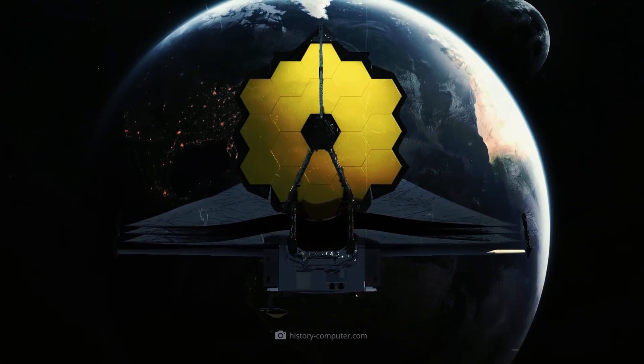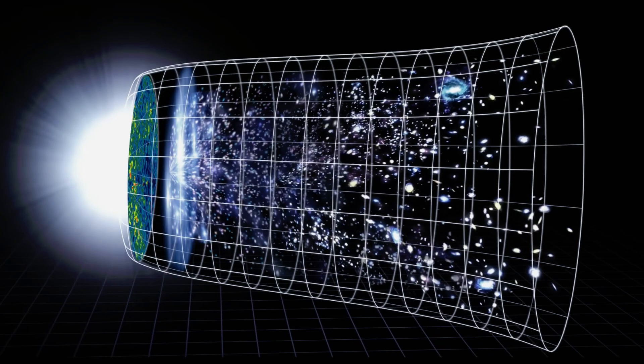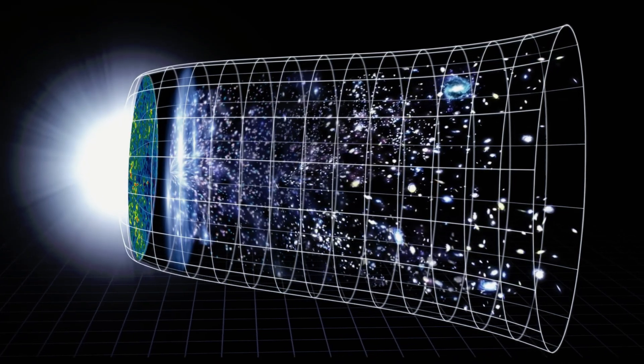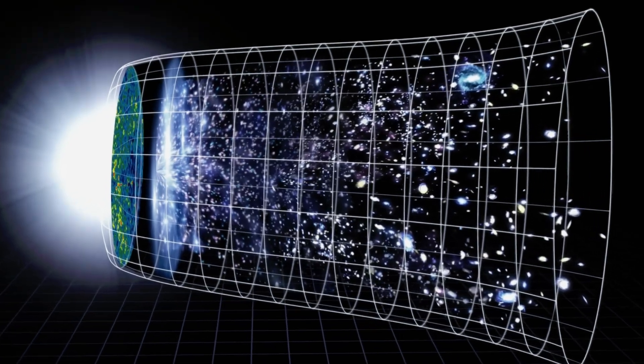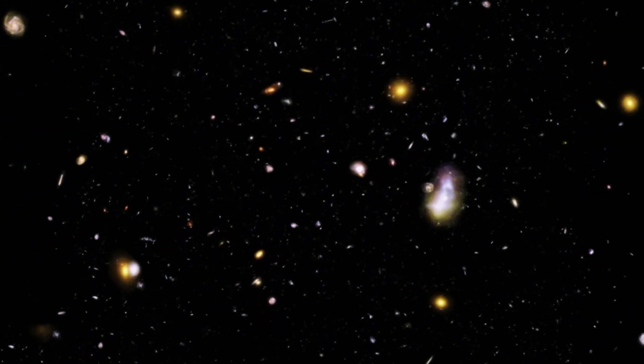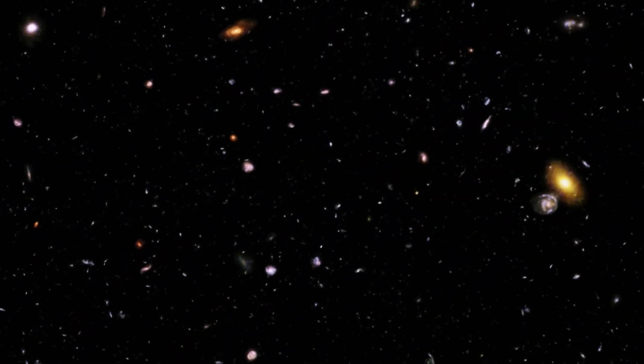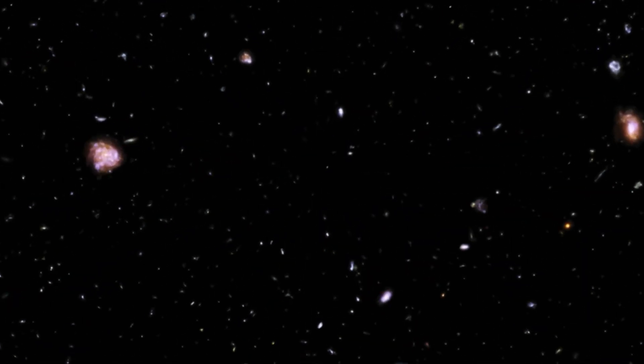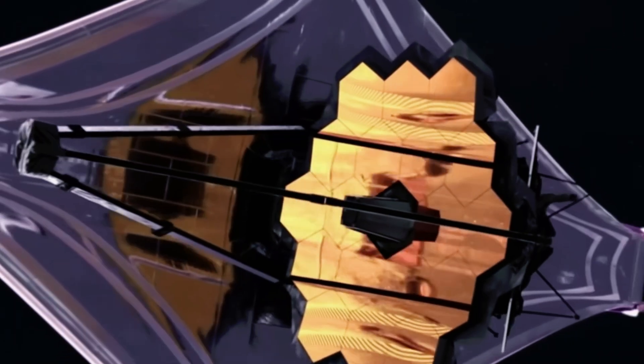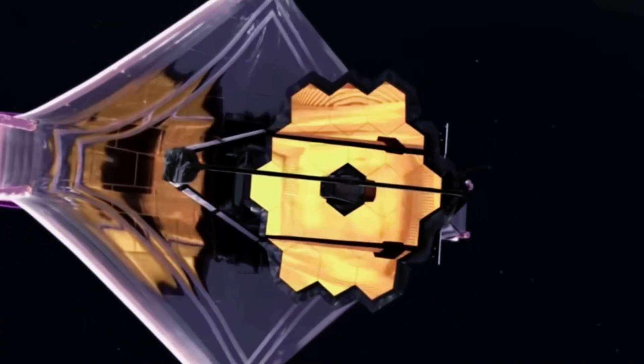And it doesn't stop there. The universe, according to theory, should look roughly the same in every direction. This is called isotropy, a key principle of cosmology. But once again, James Webb throws a wrench in the machine.